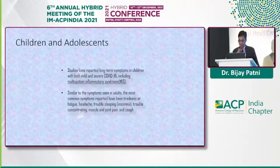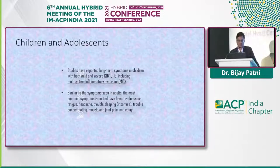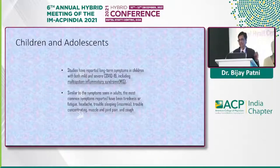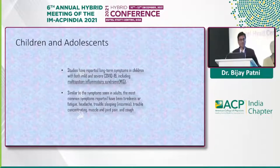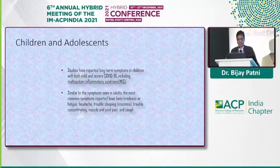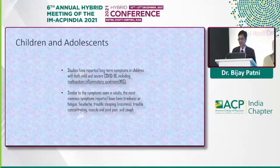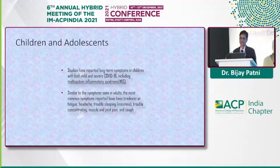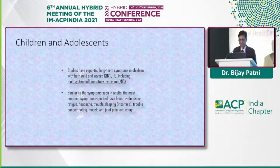Multi-system inflammatory syndrome in children and adolescents is well described. Even a child of three can present with symptoms like tiredness, fatigue, inability to play or perform routine activities, headache, trouble sleeping, trouble concentrating, and muscle and joint pain. Children were thought to be least affected by COVID, but a certain group presents with multi-system inflammatory syndrome, leading to a wide gamut of symptoms.